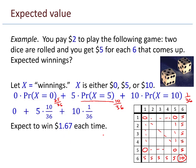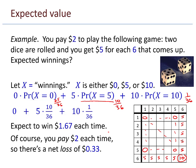To compute the expected value of X, I take 0 plus 5·(10/36) plus 10·(1/36), and that ends up being about $1.67. So aren't you happy you can play this game again and again and win about $1.67 back each time? Of course, you have to pay $2 each time. So in fact, you're suffering a net loss of about 33 cents each time you play.